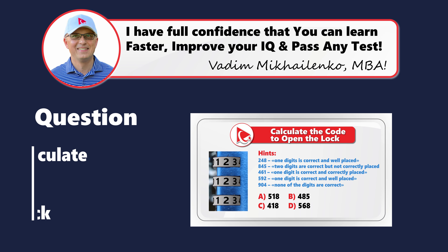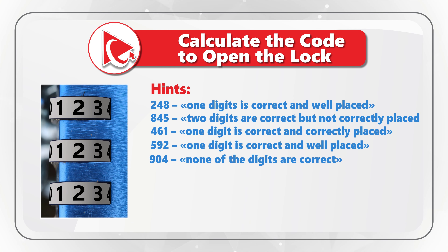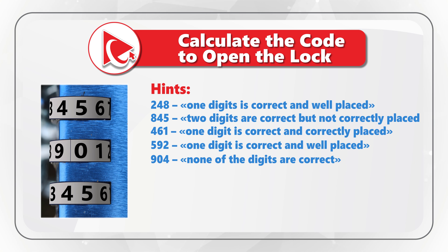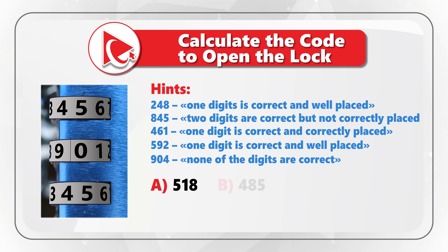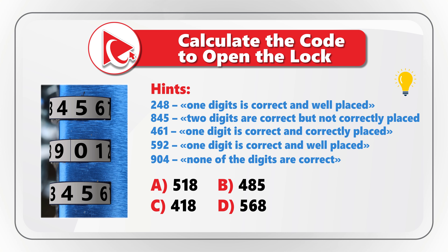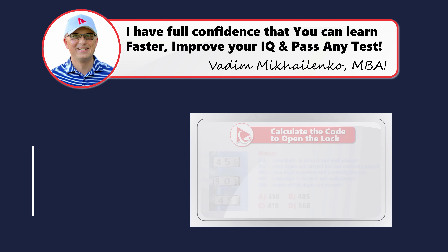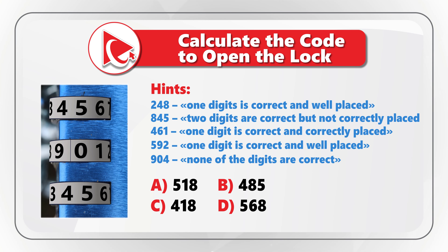Here is a challenging problem — by solving it you will boost your cognitive abilities. You are presented with five hints to unlock a code and open a lock. Hint 1: digits 2, 4, 8 — only one digit is correct and well placed. Hint 2: digits 8, 4, 5 — two digits are correct but not correctly placed. Hint 3: digits 4, 6, 1 — only one digit is correct and it is correctly placed. Hint 4: digits 5, 9, 2 — only one digit is correct and it is well placed. Hint 5: digits 9, 0, 4 — none of the digits are correct. The choices are: A: 5,1,8; B: 4,8,5; C: 4,1,8; D: 5,6,8.